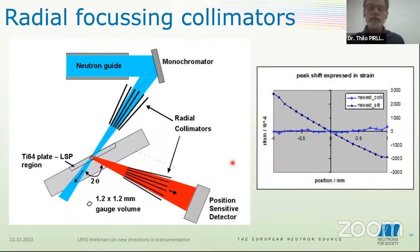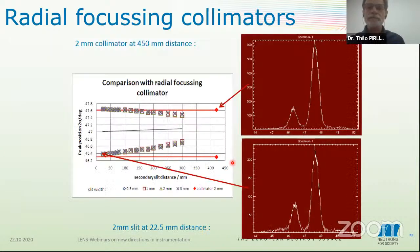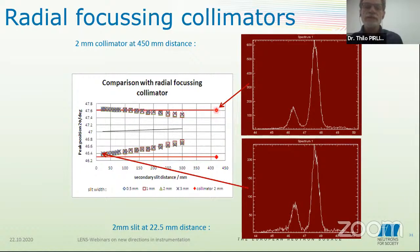Here's the proof — you've seen this already. That's the measurement with a slit at several distances, and this is the measurement from a radial collimator at 430 millimeters distance from the sample. If you extrapolate the measurement with the slits to zero, so to the sample point, you end up at the positions that are recorded by the collimator.